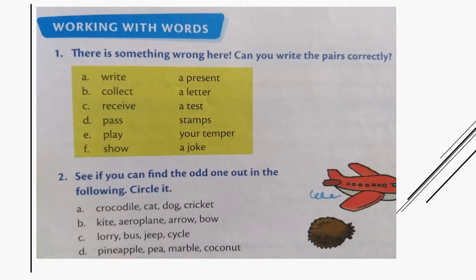You need to match the correct words. There is something wrong here. Can you write the pairs correctly? They're asking you to match the correct words. So let us see. The first one is 'write a letter'. Here is column A and this is column B where you should match the letters correctly. Write a present, a letter, a test, stamps, your temper, a joke. Which do you think is the correct answer?